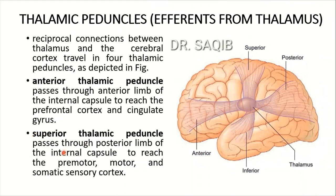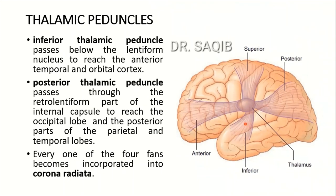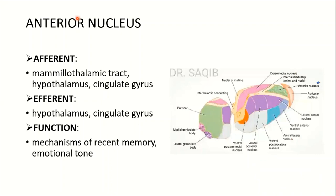The superior thalamic peduncle passes through the posterior limb of the internal capsule to reach the premotor, motor, and somatic sensory cortex. The inferior peduncle passes below the lentiform nucleus to reach the anterior temporal and orbital cortex. The posterior thalamic peduncle passes through the retrolentiform part of the internal capsule to reach the occipital lobe and the posterior parts of the parietal and temporal lobes. Every one of the four peduncles becomes incorporated into the corona radiata as projection fibers along with the internal capsule.